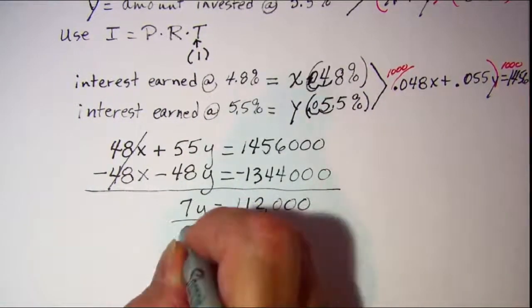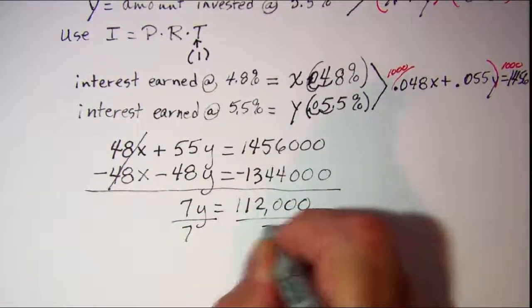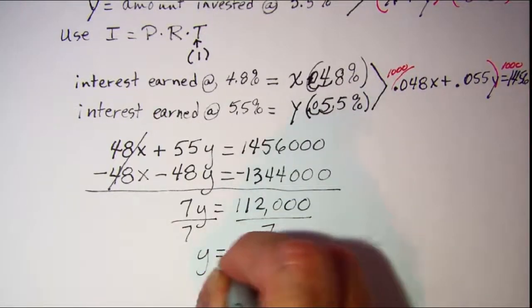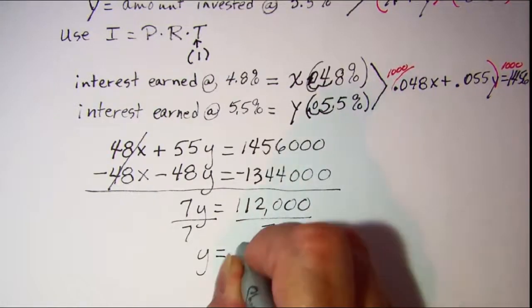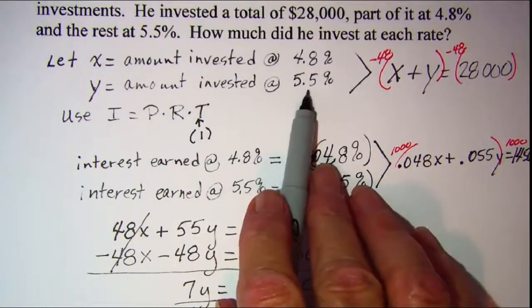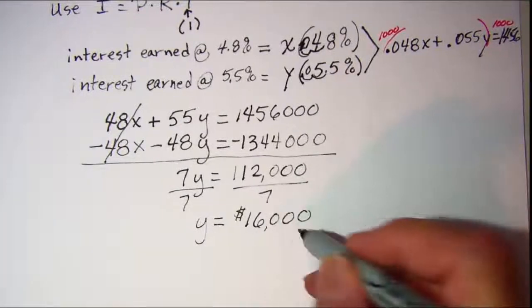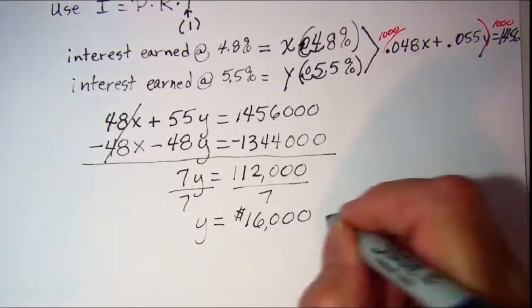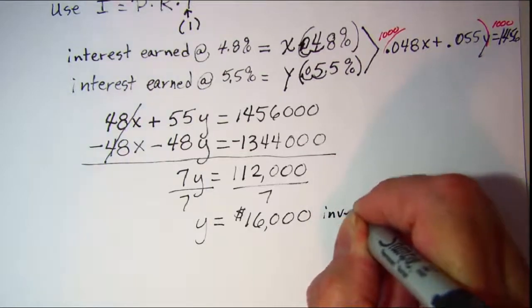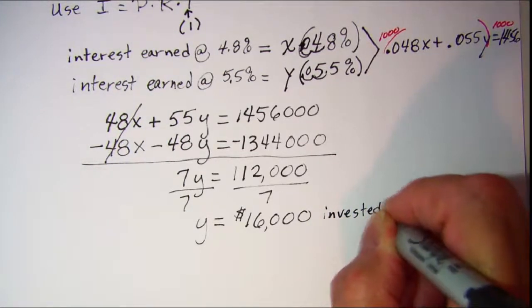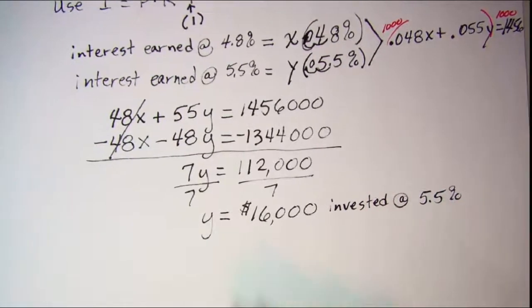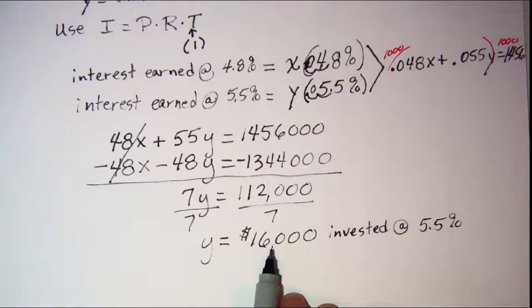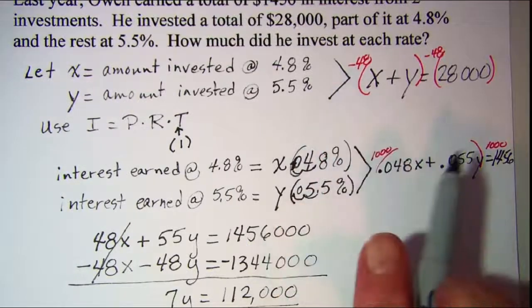Divide both sides by 7 and y is equal to 16,000. So since y was the amount invested at 5.5%, I would label this $16,000 invested at 5.5%.